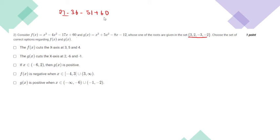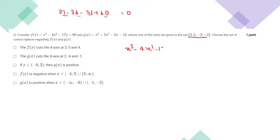Let us substitute x equals 3 into f(x): it becomes 27 minus 36 minus 51 plus 60, which equals 0. So x equals 3 is one of the roots. Now let us find the other two roots by dividing x cubed minus 4x squared minus 17x plus 60 by (x minus 3).